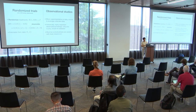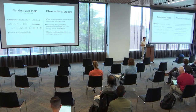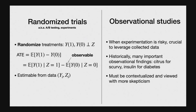To avoid the types of selection bias we saw in the museum example, the best way to go is to randomize your treatment assignments. If you flip a random coin to decide your treatments, then your potential outcomes are independent of the observed treatment assignment. This allows you to condition on Z equals 1 for Y1 and Z equals 0 for Y0 when computing the ATE.